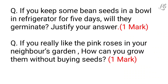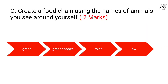If you really like the pink roses in your neighbor's garden, how can you grow them without buying seeds? This question is based on the concept of vegetative reproduction. The pink roses can be grown in your own garden by using stem cuttings. Next: create a food chain using the names of animals you see around yourself. If a student lives in a plain area, a hilly area, or near water, they can choose animals from their habitat accordingly and create a food chain like this.